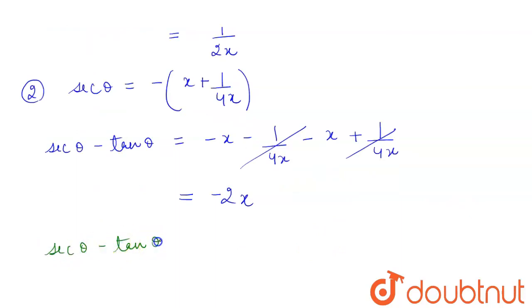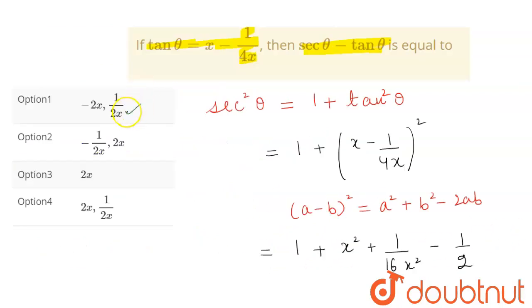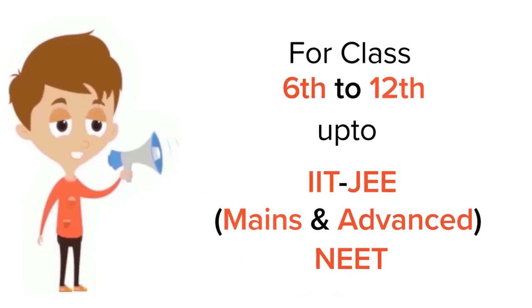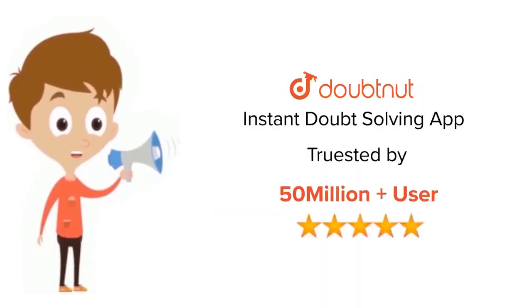So we have found two values for sec θ minus tan θ: one is minus 2x and one is 1 upon 2x. Looking at our options, option number one becomes the correct answer. This content is for class 6 to 12th, IIT JEE, and NEET level, trusted by more than 5 crore students.